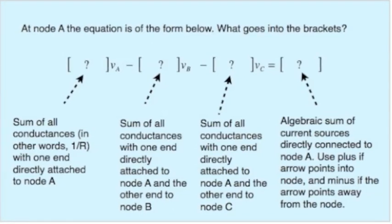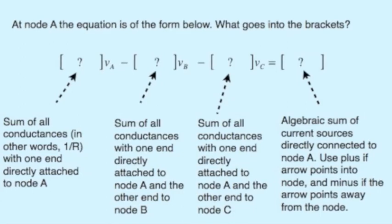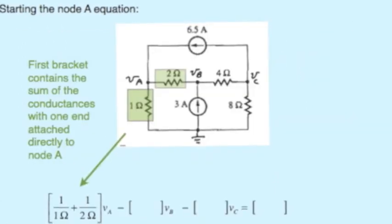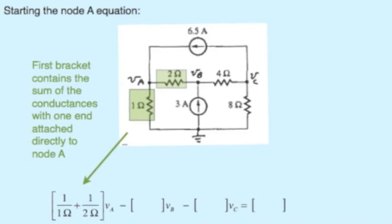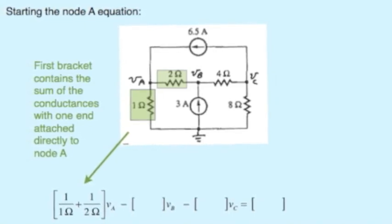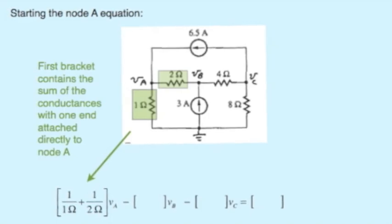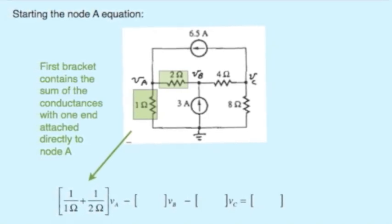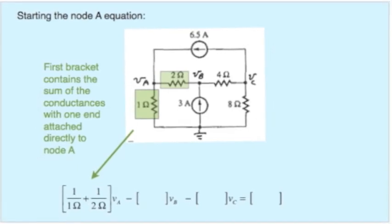And now let's see how this would play out for that particular four-node circuit we were looking at a little while ago. The numerical value in front of V sub A for the node A equation comes from those resistors that have one end directly connected to node A. That's the 2 ohm resistor and the 1 ohm resistor. So we have 1 over 1 ohm plus 1 over 2 ohm, or 1.5 Siemens.